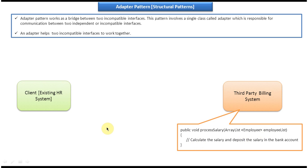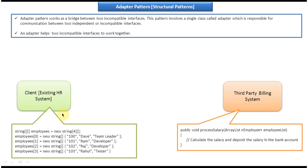On the left side you can see the HR system, and it has employee information as a string array. The HR system needs to call the process salary method. However, the HR system has employee information as a string array, but what the third-party billing system expects is an array list of employees. So the HR system cannot make a call to the third-party billing system — these two systems are incompatible.